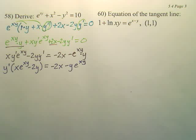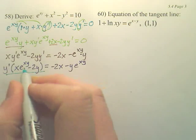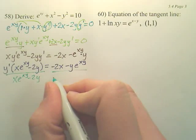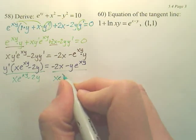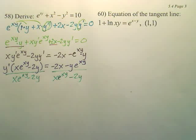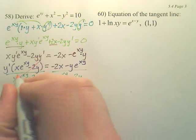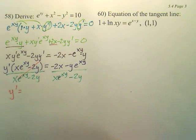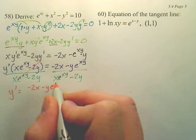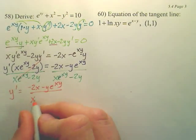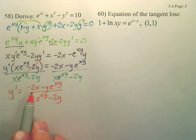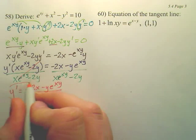And the last step would be to divide by this because we want to get the y prime by itself. That's gone. So y prime equals negative 2x minus y times e to the xy over x times e to the xy minus 2y. I don't see any GCFs that will pull out and cancel. So I think we are done.